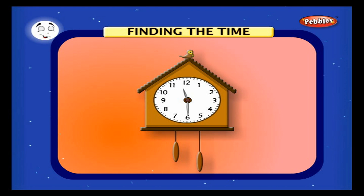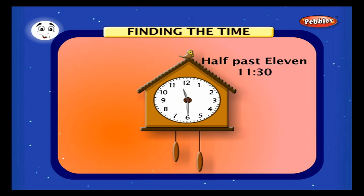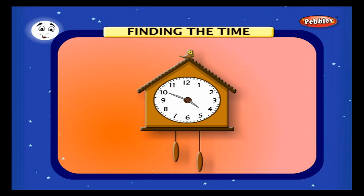Finding the time: in this clock the minute hand is at 6, so it has crossed six numbers of five divisions each, so 5 into 6 is equal to 30 minutes. The hour hand is between 11 and 12, so the time is half past 11. In this clock the minute hand is at 10, it means 10 into 5 is equal to 50 minutes, and the hour hand is between 4 and 5, so the time is 50 minutes past 4.